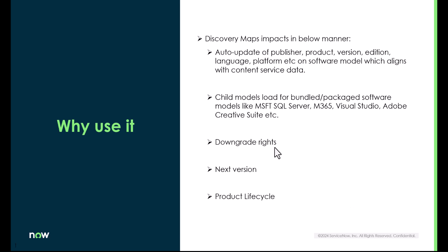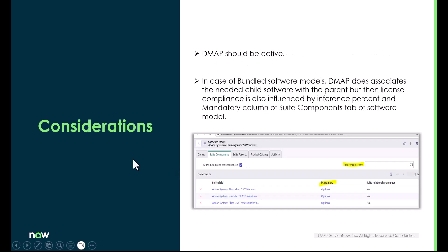SAM admins can then update the child software based on the contract. DMAP also loads relevant downgrade rights of the software, populates the next version or higher upgraded version of the software models, and indirectly helps in loading the product lifecycle. There are two specific SAM jobs which load the product lifecycle, and they leverage data in publisher, product, version, etc. fields — which are automatically loaded when a DMAP is used in the software model.